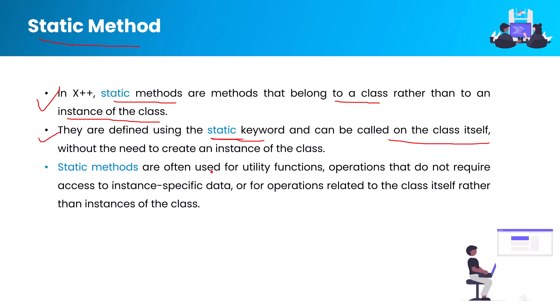The third point is that static methods are often used for utility functions — operations that do not require instance-specific data. We can also create a static method for operations related to the class itself rather than to an instance of that class. When the work is not specific to the instance level, we should create a static method. Now we'll go to the VM and I'll show you how to create one.